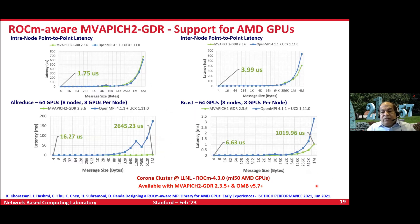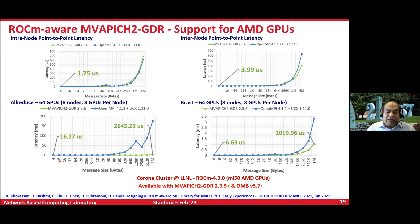These optimizations are on the NVIDIA GPU side, but we also support AMD GPUs, and Intel GPU support is coming. Here are sample numbers running with AMD GPUs with the ROCm software stack. GPU-to-GPU within the node: we can do intra-node MPI communication at 1.75 microseconds, and inter-node at around 4 microseconds.